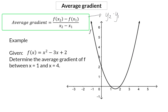Let's have a look at an example. Given function f which forms a parabola, determine the average gradient of this function f between x equals 1 and x equals 4. This average gradient means that we draw a straight line between the two given points and then calculate the gradient of this line. You can either separately determine the two y values or immediately substitute into the equation.